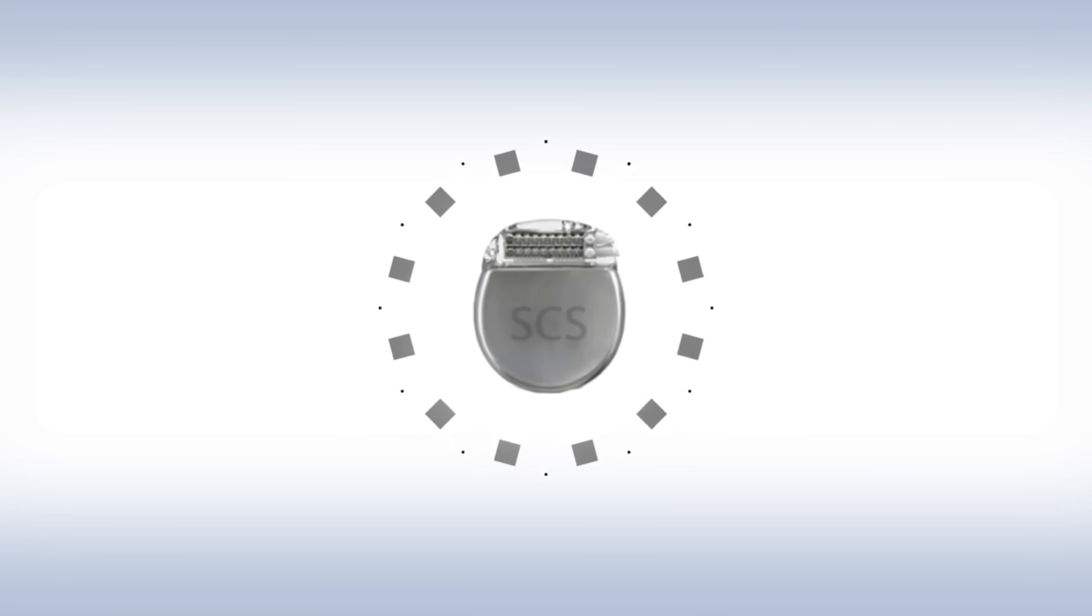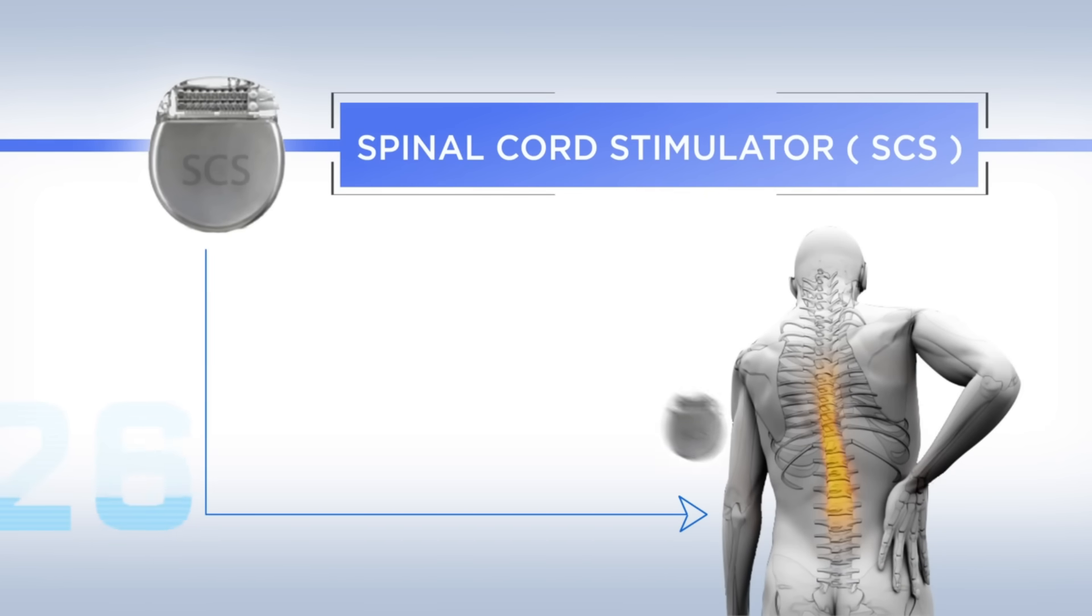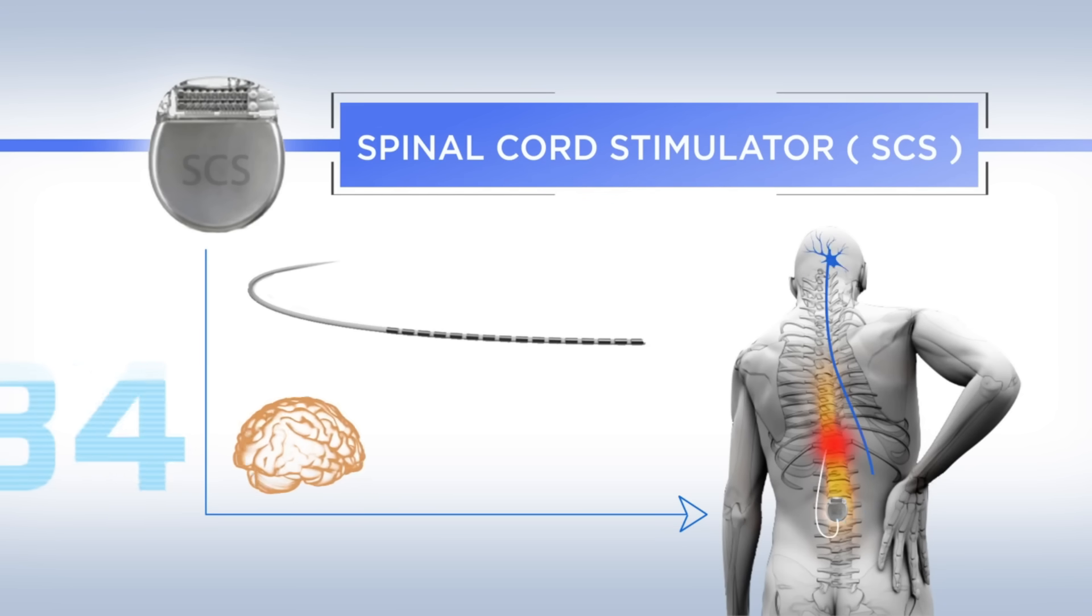a Spinal Cord Stimulator, or SCS, is a small device implanted under your skin. Some are the size of a quarter. It's attached to a thin wire placed along the spinal cord up to the nerve that's causing pain. The stimulator creates a tingling sensation that masks pain signals to the brain.